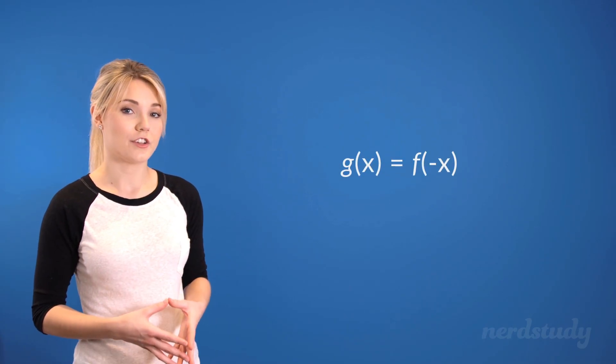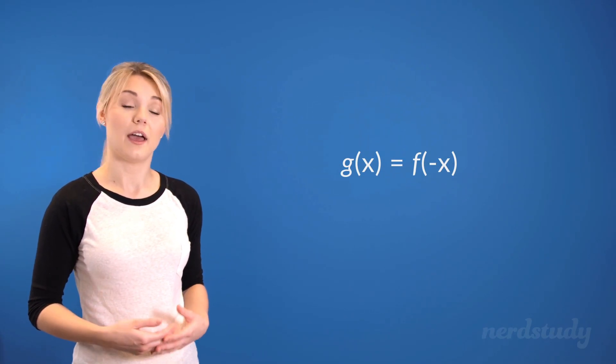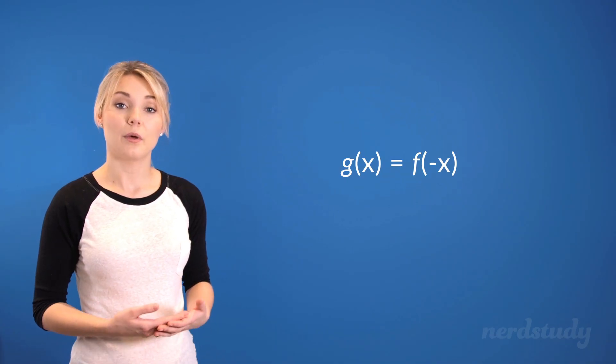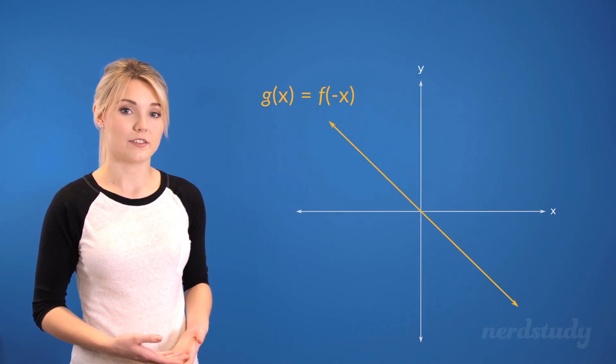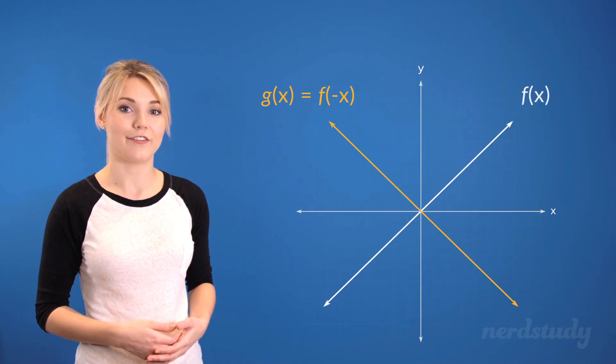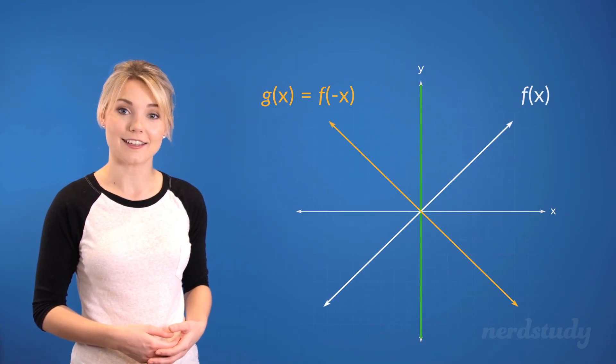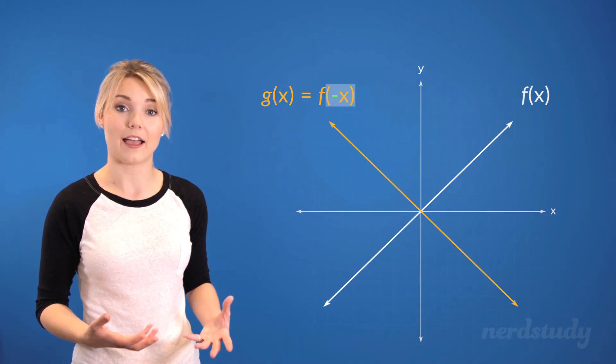If we were given the function g(x) is equal to f(-x), then we would know that the graph of g(x) would be a reflection of the graph f(x) along the y-axis, since the negative sign is found within the brackets.